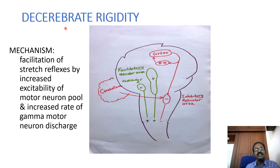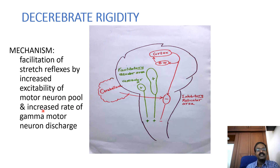Regarding the mechanism of decerebrate rigidity: decerebrate rigidity occurs due to the increased activity of the stretch reflexes. There is facilitation of the stretch reflexes by the increased excitability of the motor neuron pool and increased rate of gamma motor neuron discharge. This happens when the lesion occurs between the superior colliculus and inferior colliculus — that is the mid-collicular lesion.